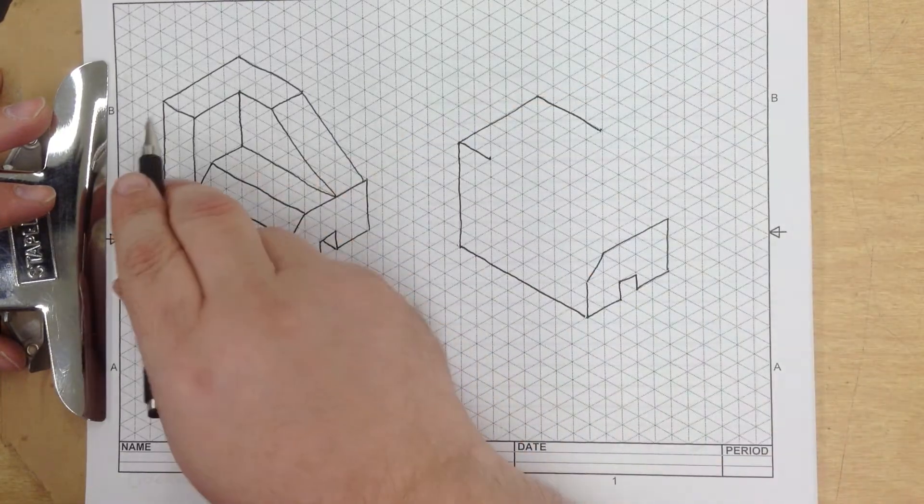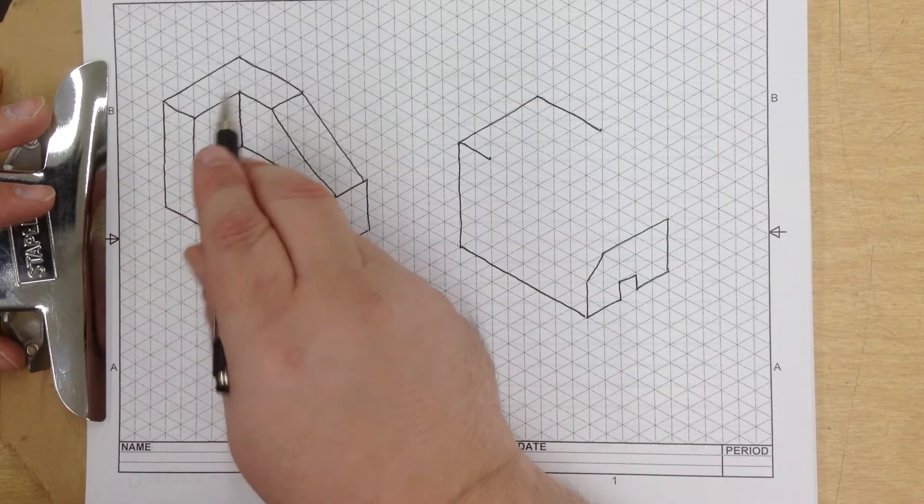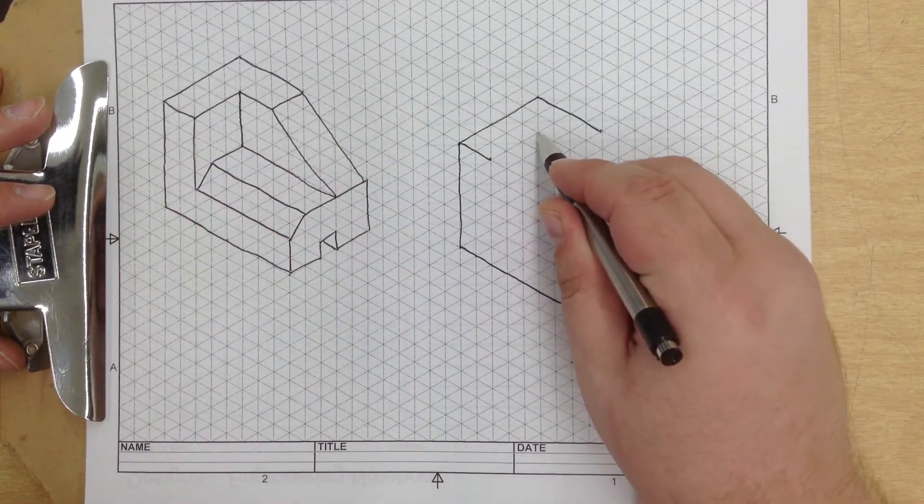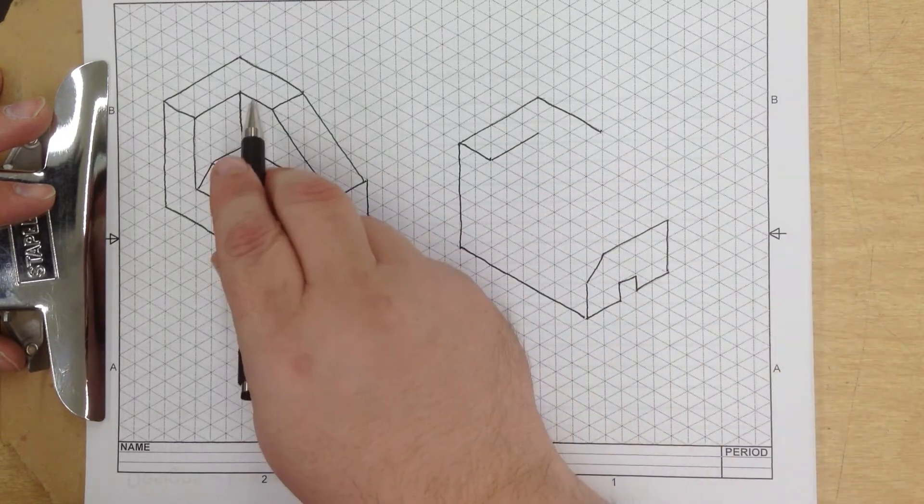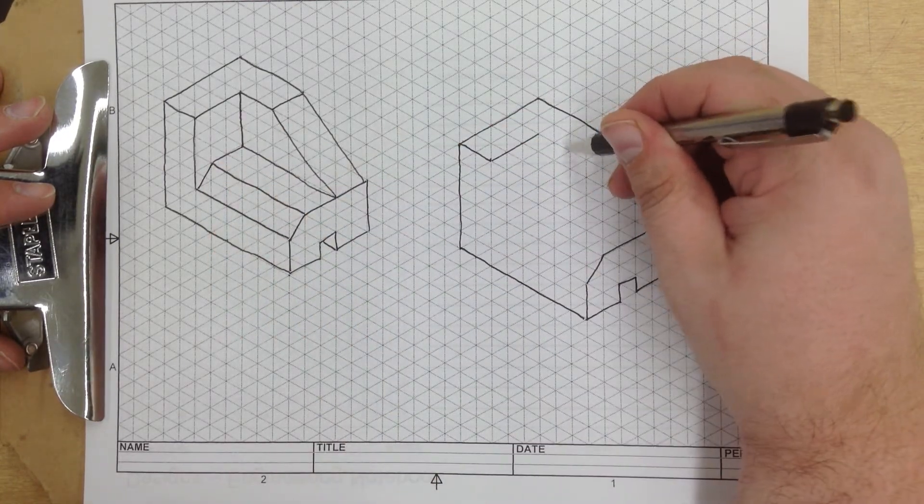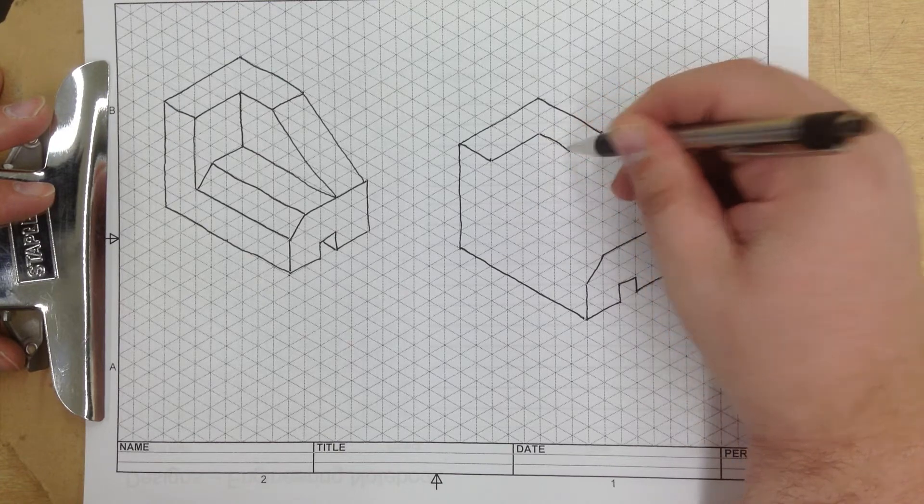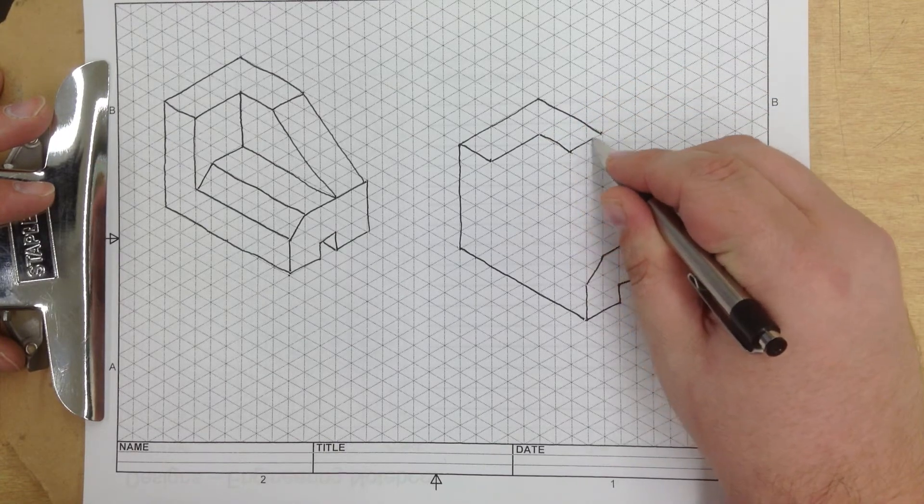Just like so. One, two, three... one, two, three. One, two... one, two. Close the shape.